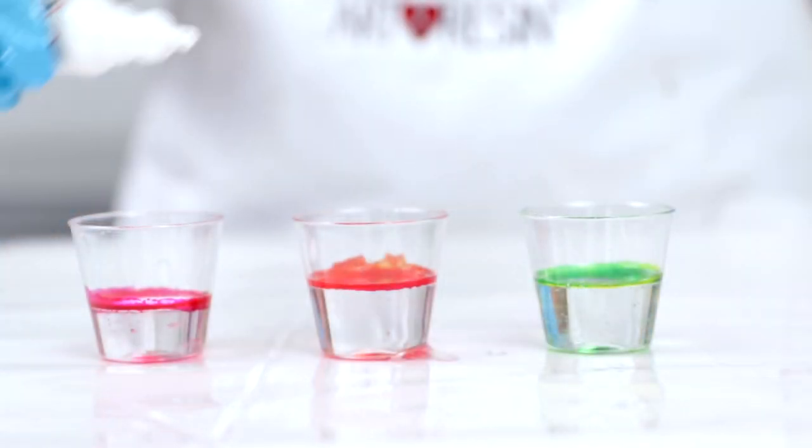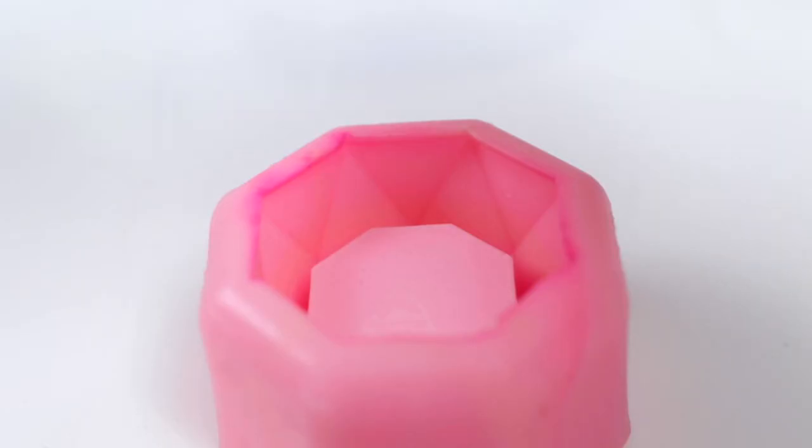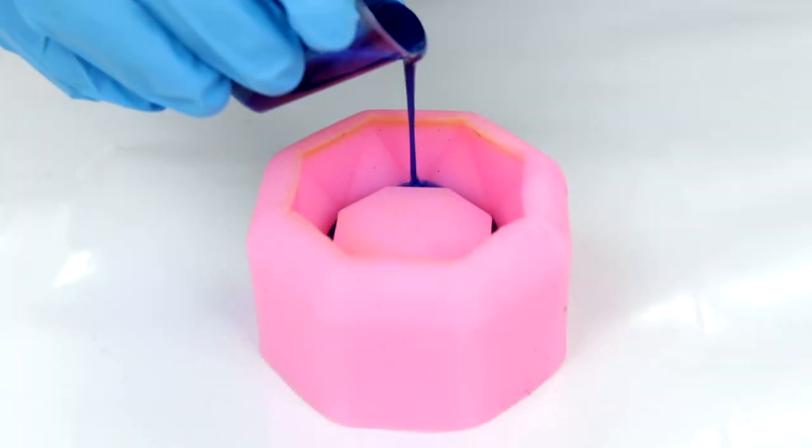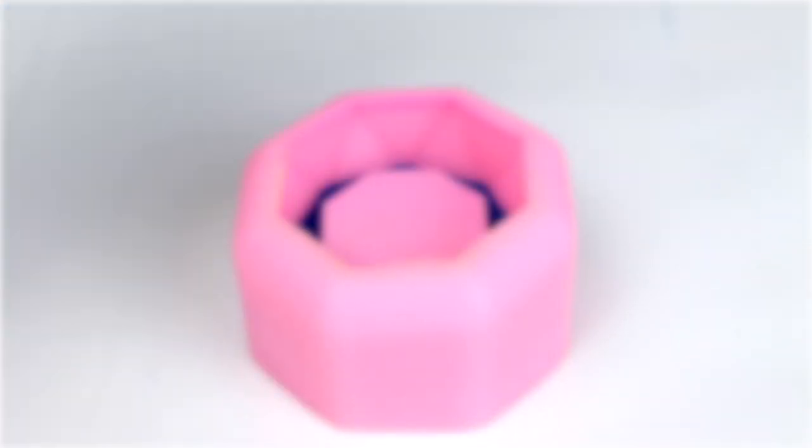For example, try pre-mixing your inks in the resin and then pouring them into the mold to achieve a pastel look. Or try pouring one color into the mold about a third of the way up, then let it cure for four hours. Then mix and pour another color to fill the rest of the mold for a color blocking effect.